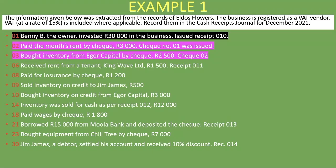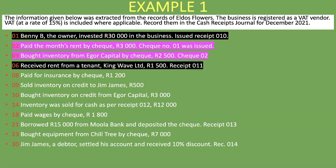We've completed that transaction and highlight it. On the 8th, paid insurance by check 1,200 — does not go into the cash receipts journal as we are paying out. On the 9th, sold inventory on credit to Jim James 500 rand — does not go into the cash receipts journal since we sold on credit and have not received money yet. On the 10th, bought inventory on credit from Ego Capital 3,000 rand — also skipped, as we are not receiving money.